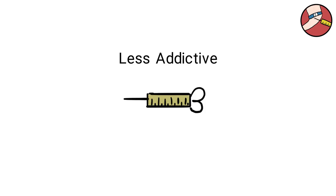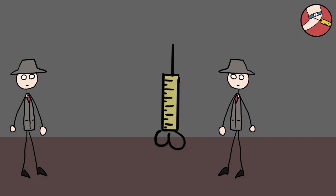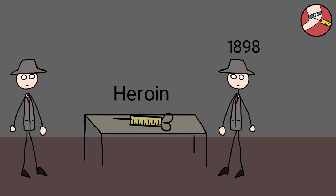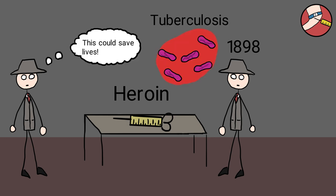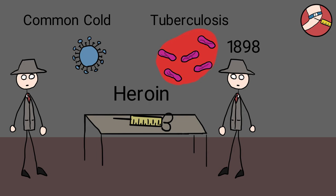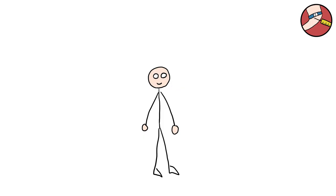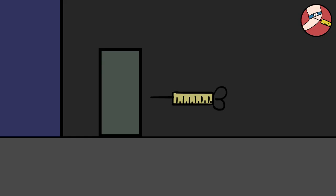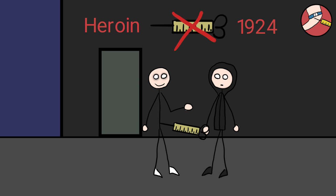Best of all, at the time, it was considered less addictive than available medicines like morphine and codeine. You have to remember that when heroin was invented in 1898, people were constantly at risk of illnesses like tuberculosis and even the common cold. As effective as the treatment was, people quickly began abusing it and losing their lives to the drug. As a result, heroin was banned in 1924. Of course, that never stopped people from getting their hands on the addictive drug.